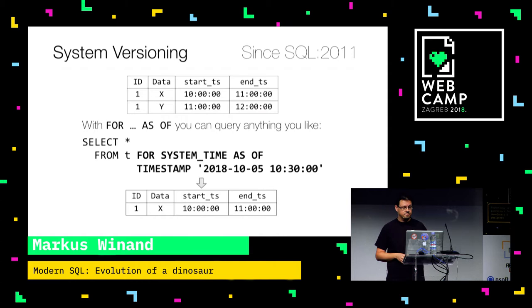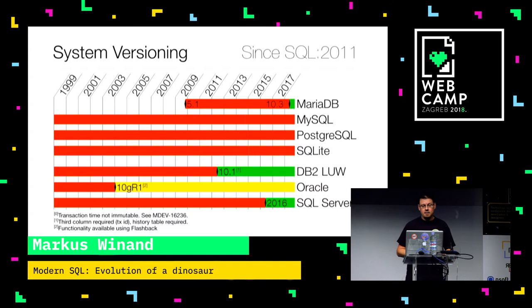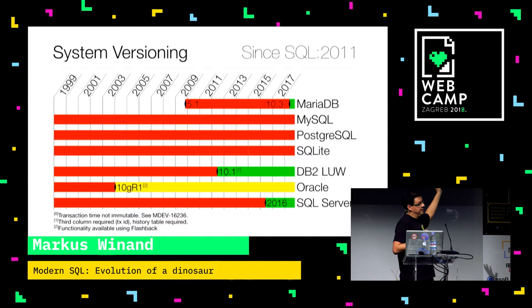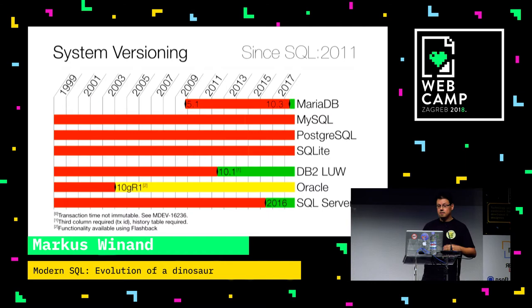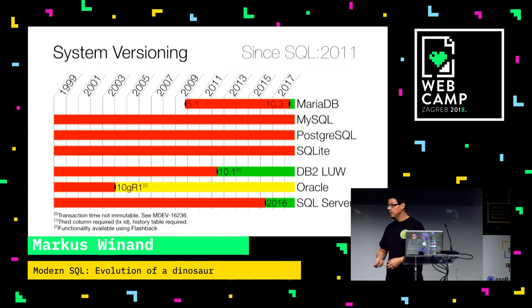So now there's a standard solution for that. Not all databases support it yet, but MariaDB as an open source database just started supporting it — it works, it's tested. In MariaDB you can use it starting with version 10.3, which was released a few months back. In commercial databases you can also use it. In SQL 2011 — temporal databases was the big thing — there's also application versioning, where the application can provide the validity timestamps explicitly, but this is a little bit more complex, so I don't show it here.